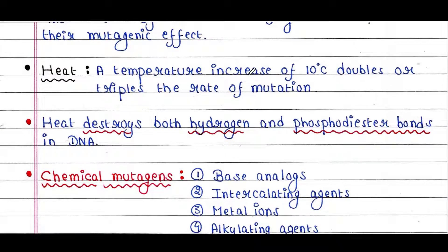Heat is also a physical mutagen. A temperature increase of 10 degrees Celsius doubles or triples the rate of mutation. Heat destroys both hydrogen bonds and phosphodiester bonds in DNA.